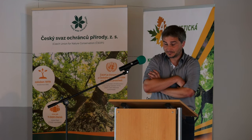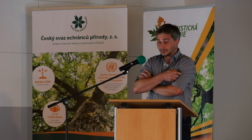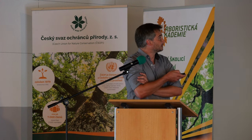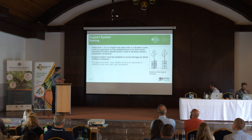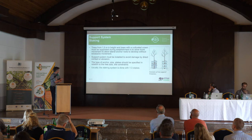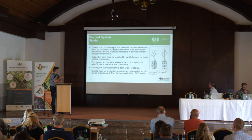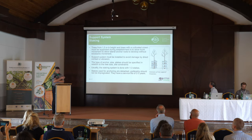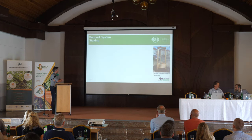Supporting systems: trees from approximately 1.5 meters height and trees with a cultivated crown must be supported during establishment to allow trunk movement and development of lateral anchor roots. Support systems must be installed to avoid damage by direct contact. The type and size of anchor stakes should be specified in relation to tree size. Stakes used for anchoring should not be impregnated — they need to last two or three years and then be removed.